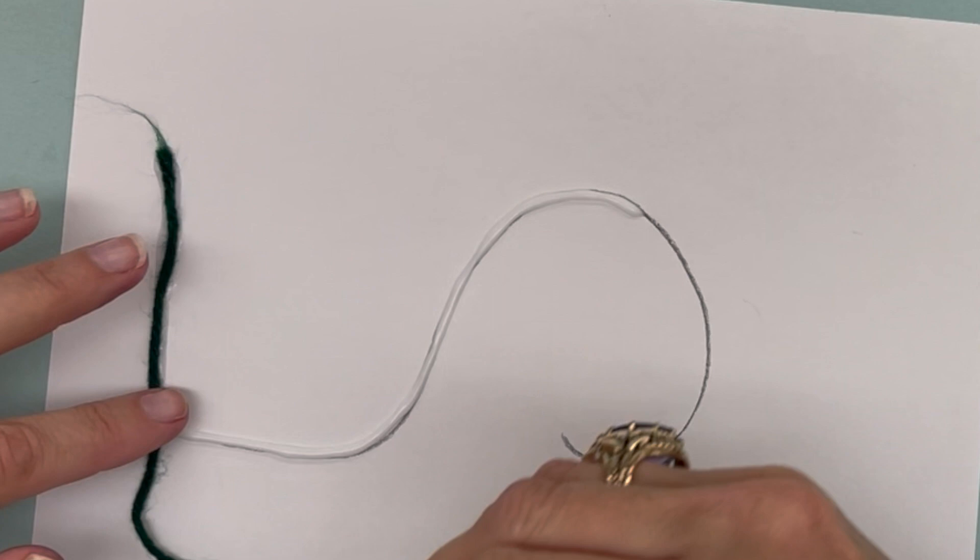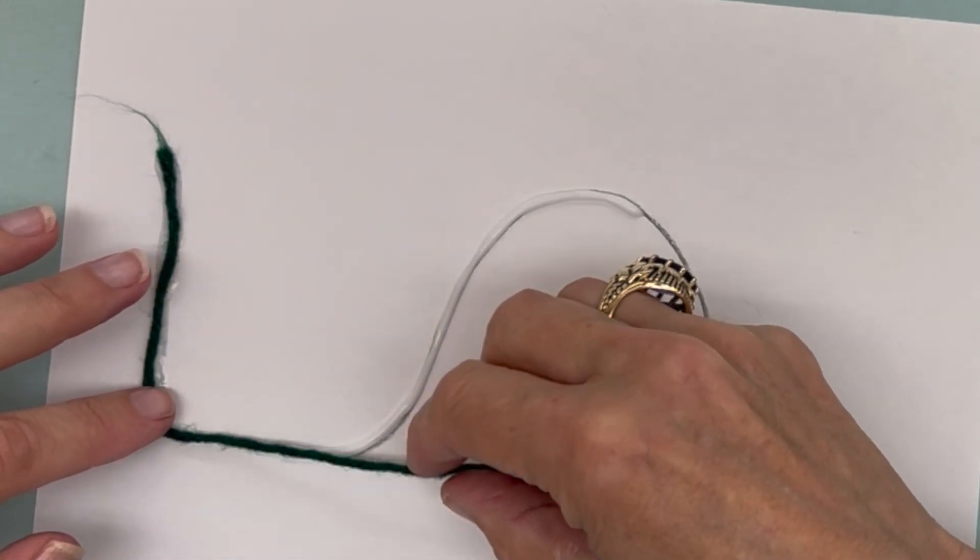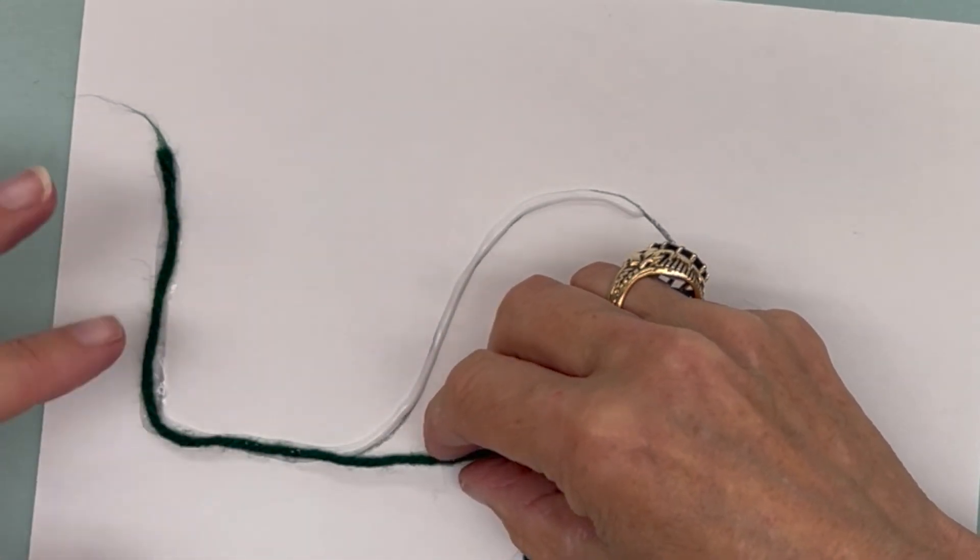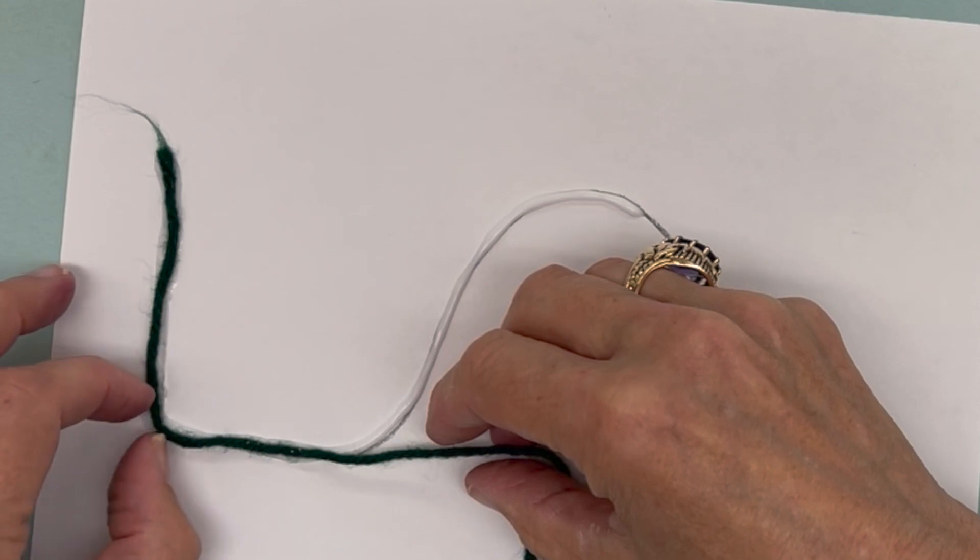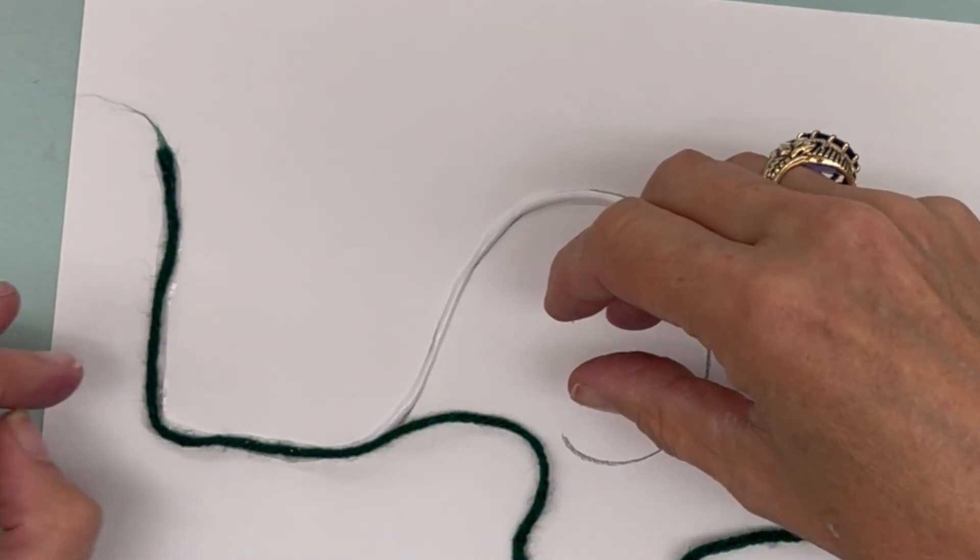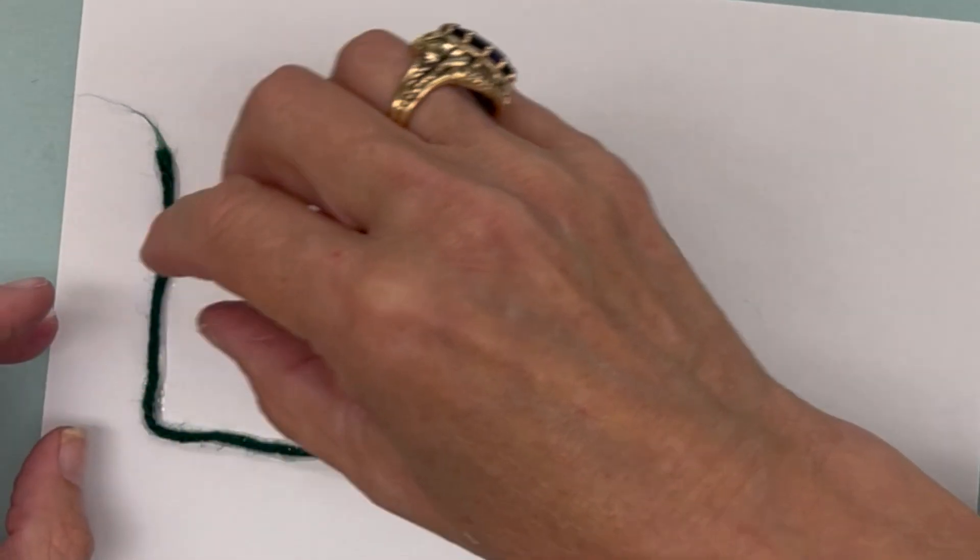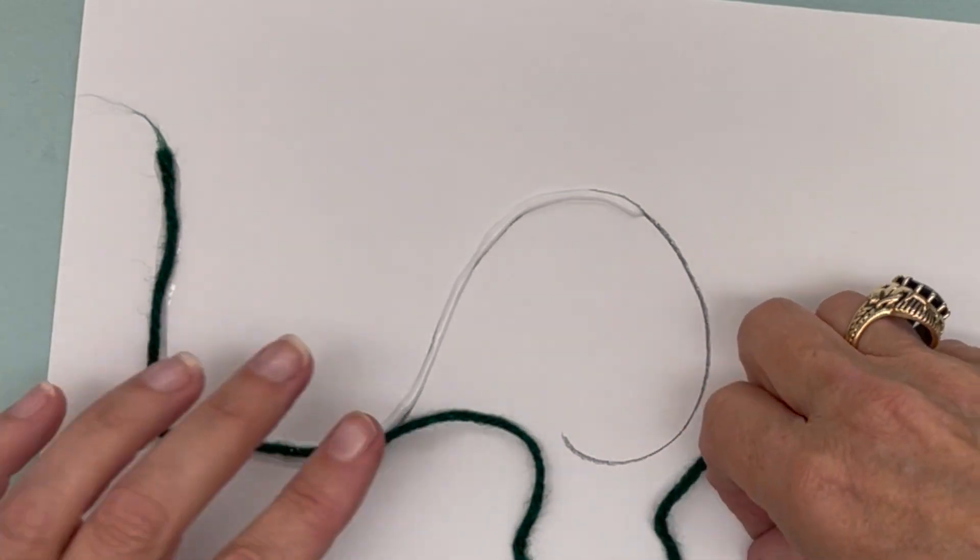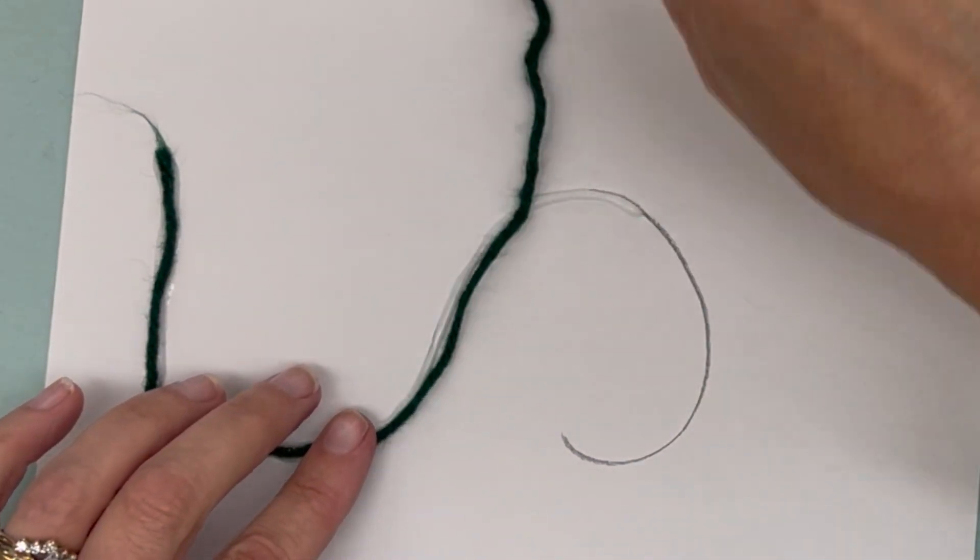I just kind of place the yarn on top of the glue. I'm going to press it down. I could make that corner a little sharper by squeezing it a little bit.